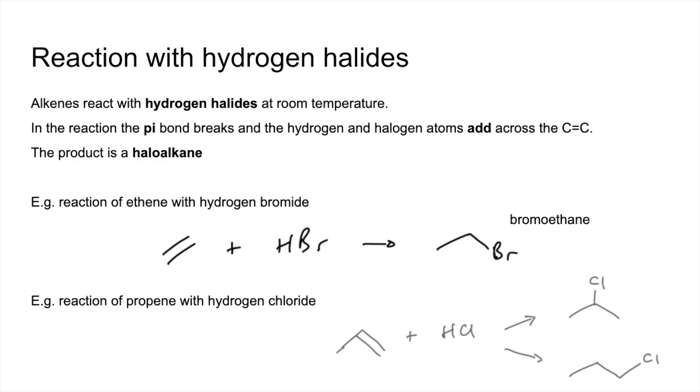And for the second reaction, there are two possible products. So we can get 2-chloropropane, or 1-chloropropane. Now, one of those products would be formed in preference to the other one. The major and minor products are explained by Markovnikov's rule. And I've got a separate video on that.